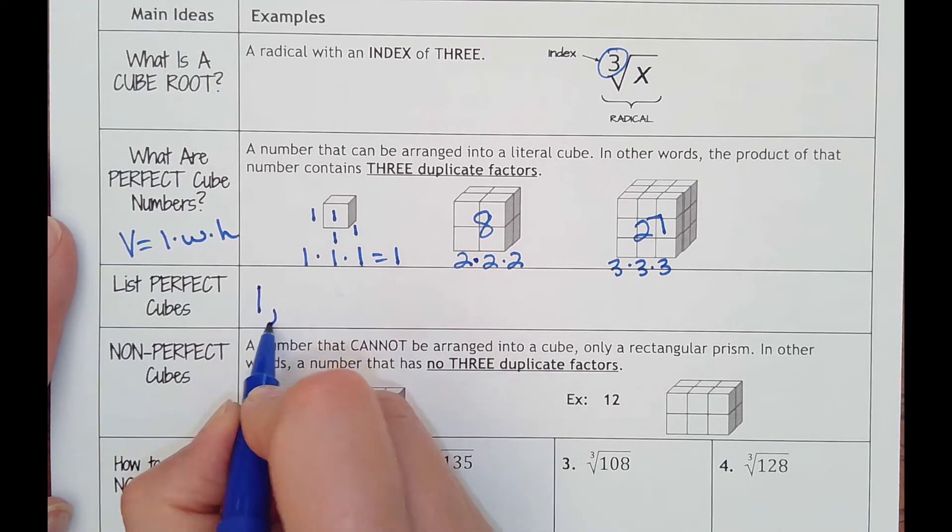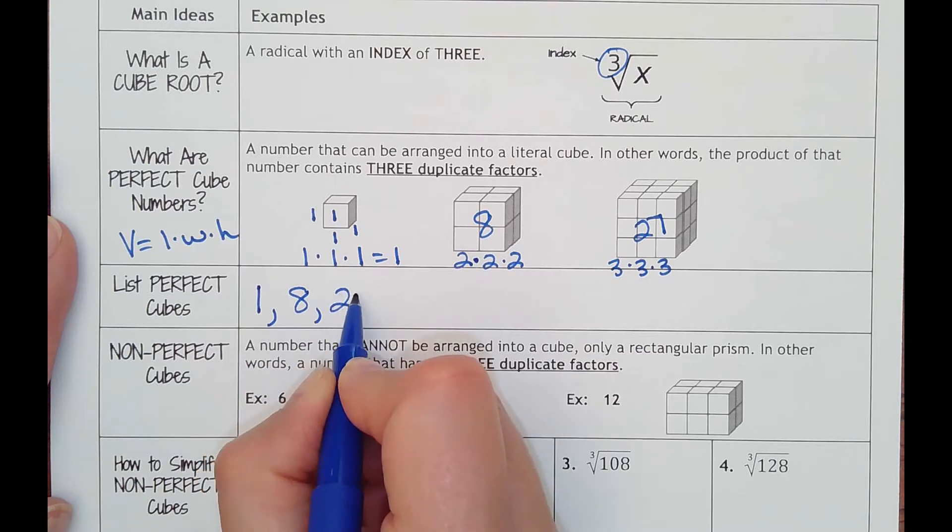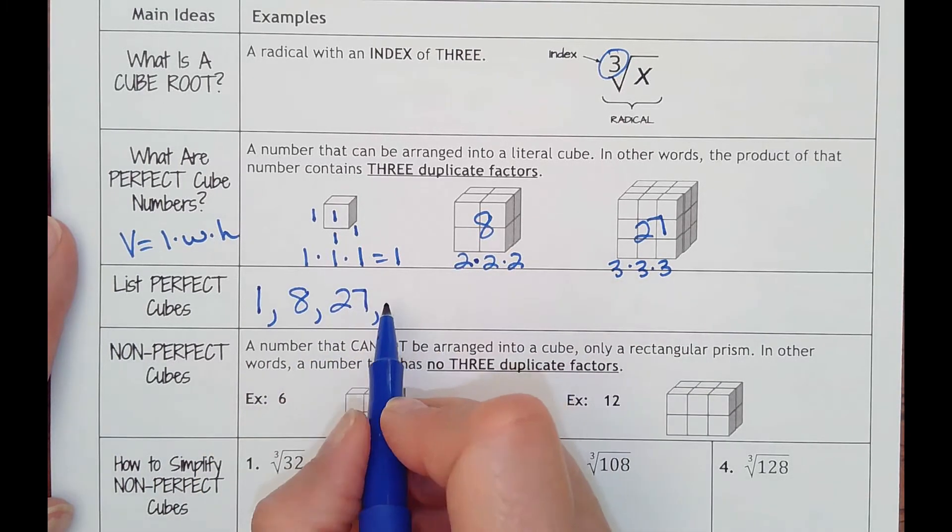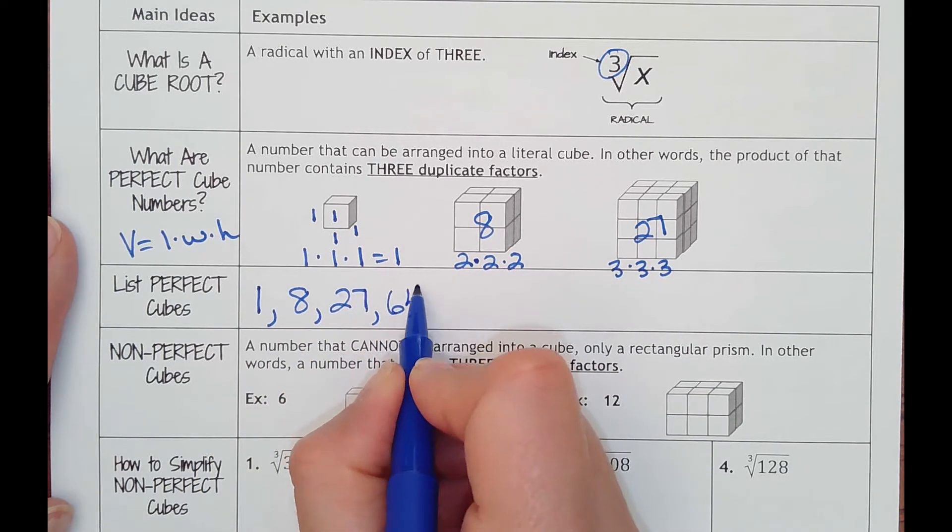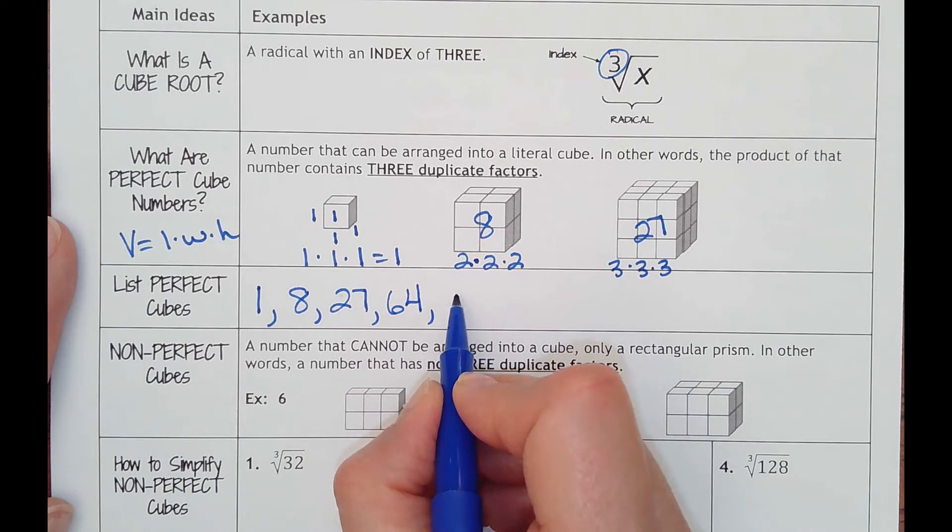Well, we started with one, then we said eight, then we said 27. Next one would be four times four is 16, times four is 64. Next one would be five times five is 25, 25 times five is 125. I would at least memorize these. These get used almost all the time.